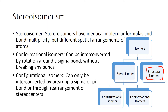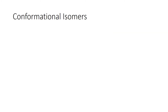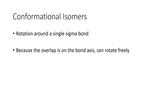Conformational isomers are rapidly interconverting, and you don't have to break any bonds to go from one to the other. Configurational isomers, on the other hand, can only be interconverted by breaking a bond or rearranging atoms. Conformational isomers occur via rotation around a single sigma bond. You might remember from our bonding unit that when a sigma bond forms, it has axial overlap — because the overlap is on the bond axis, it can rotate freely.